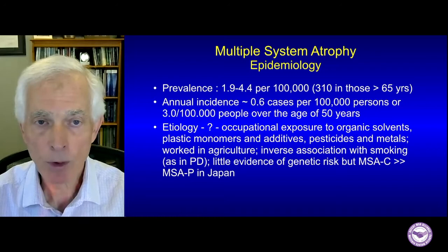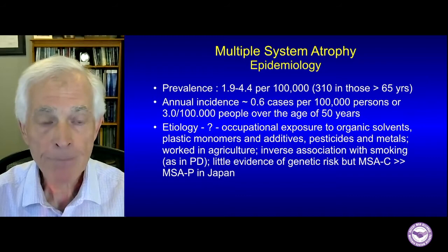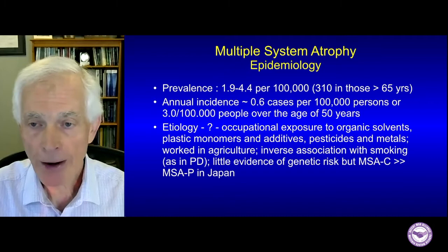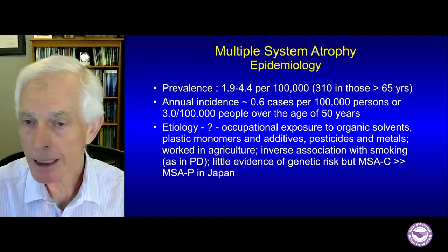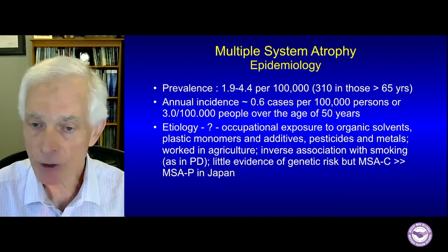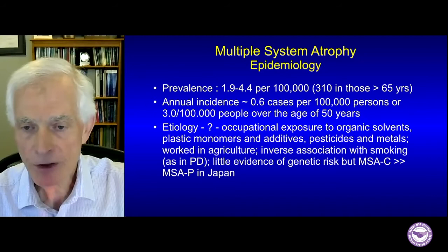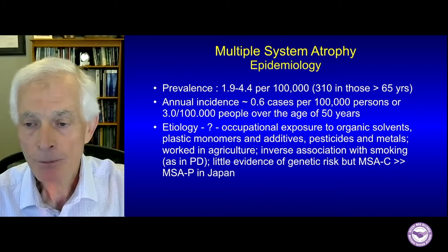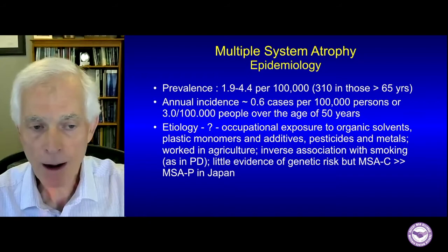MSA is a relatively uncommon disorder with a prevalence of 1.9 to 4.4 per 100,000 and annual incidence of 0.6 per 100,000, or 3 per 100,000 over age 50. The cause is unknown, but hypotheses include exposures to organic solvents, plastic monomers, pesticides, and agricultural work. There is an inverse association with smoking, as in Parkinson's. There is very little evidence of genetic risk, although in Japan the cerebellar type is far more common, suggesting possible genetic predisposition in Asians.